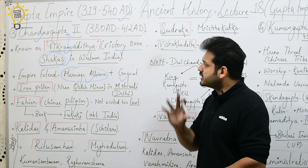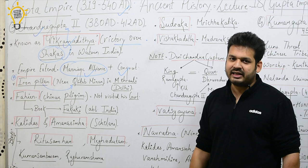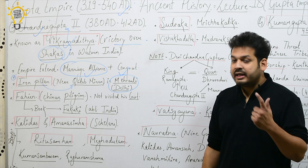A very important question comes from the prelims: the iron pillar near Qutub Minar. If you go to Delhi, you can see this iron pillar. This is related to Chandragupta II, and it is located in Delhi. This is a very important question for the prelims.